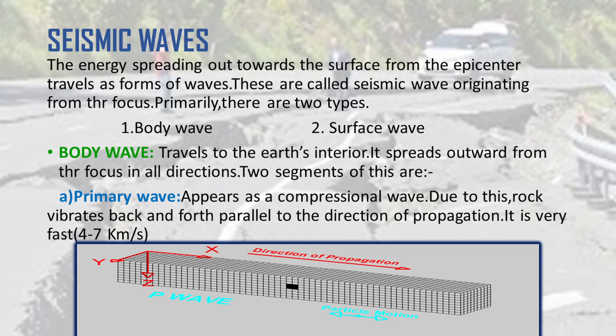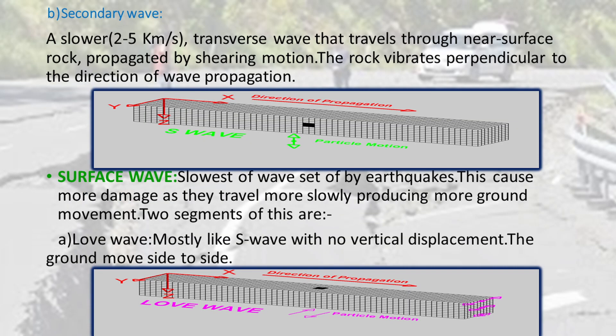Body wave is the wave that travels through the Earth's interior and is the fastest to respond at a seismograph station. It is in two types: primary wave and secondary wave. Primary wave is a compressional wave that forces the rock to move back and forth parallel, and it is the fastest of the waves with a speed of four to seven kilometers per second. Secondary wave is the second fastest, at two to five kilometers per second — a transverse wave that travels near the surface propagated by shearing motion, moving perpendicular to the propagation of the wave.